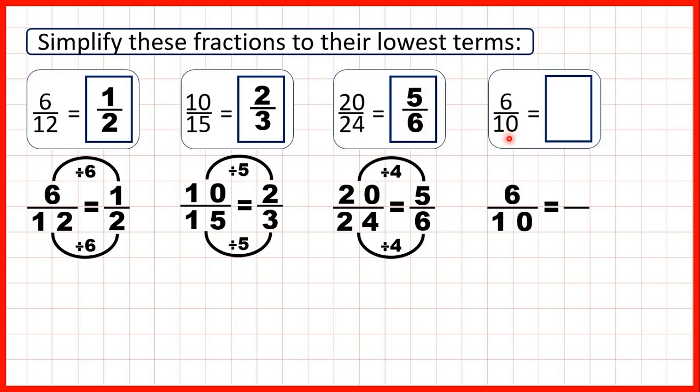Finally, we have 6 tenths. 6 and 10 are both in the 2 times table. 6 divided by 2 is 3, 10 divided by 2 is 5, so that simplifies to 3 fifths.